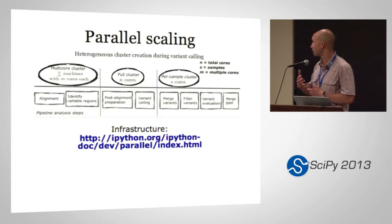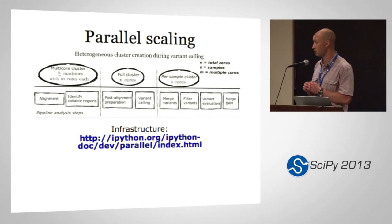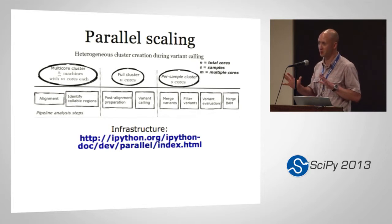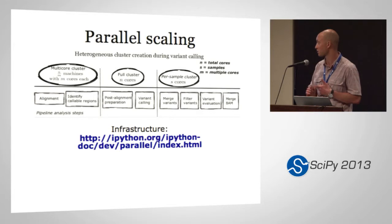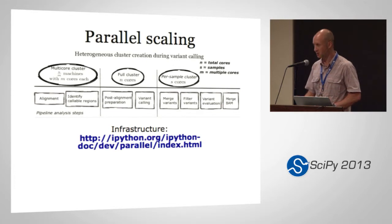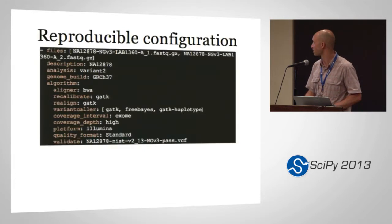As I mentioned, it scales. We use IPython under the covers to do all of the scaling. What we handle on top of that is building heterogeneous clusters. Lots of these tools parallelize in different ways — some parallelize with multicore, some parallelize over an actual cluster, and some don't parallelize at all. So we handle spinning up the appropriate type of cluster for different steps in the process.